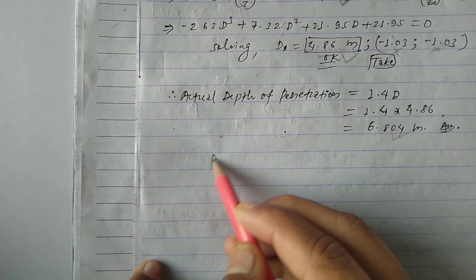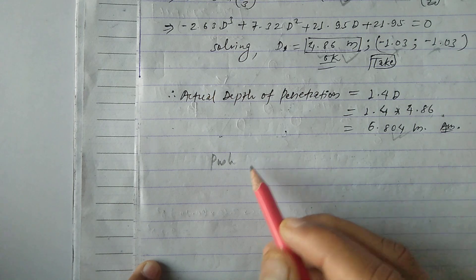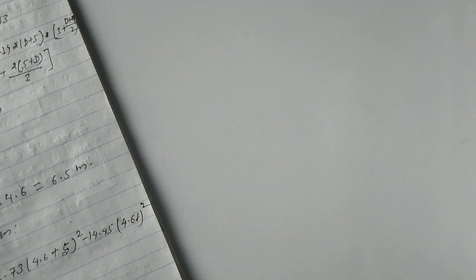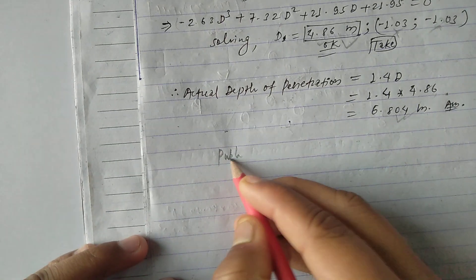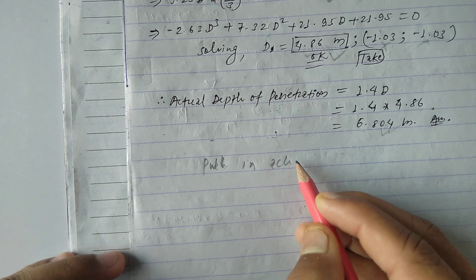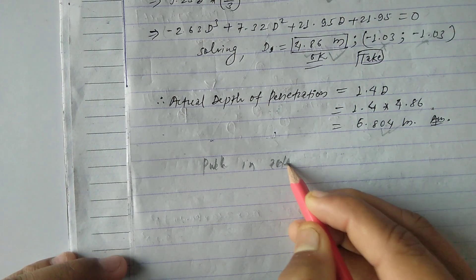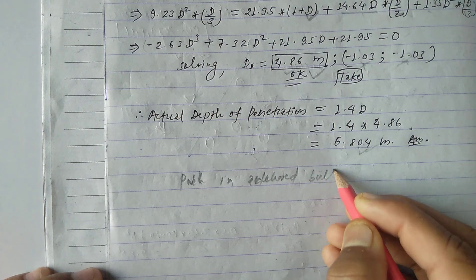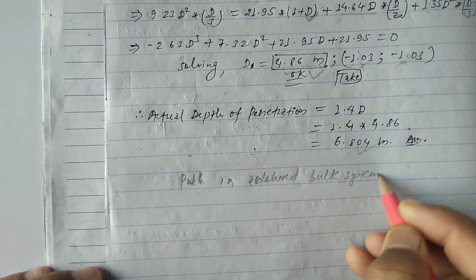In the next part, we will look at the anchored sheet pile — also called a pulled-in anchor sheet pile system, or pull-in anchor bolt system.